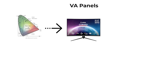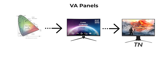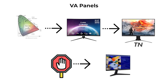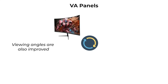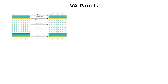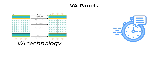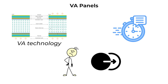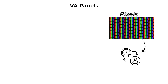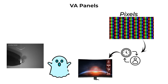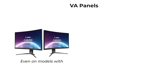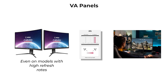Color reproduction on VA panels is better than TN, but not as accurate or consistent as IPS. Viewing angles are also improved compared to TN, but they do not match the stability of IPS screens. The main drawback of VA technology is response time, especially in darker transitions. Pixels can take longer to shift between shades of gray, which can cause ghosting or smearing effects in fast-moving scenes. Even on models with high refresh rates, this slower dark level response can be noticeable to gamers.